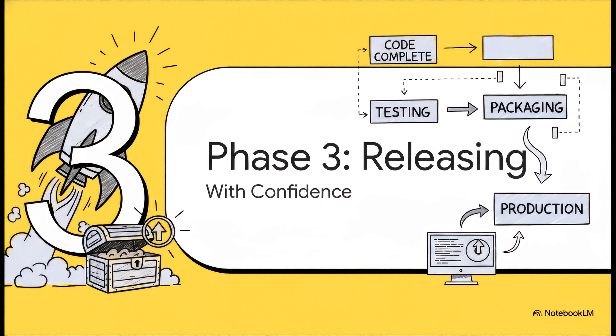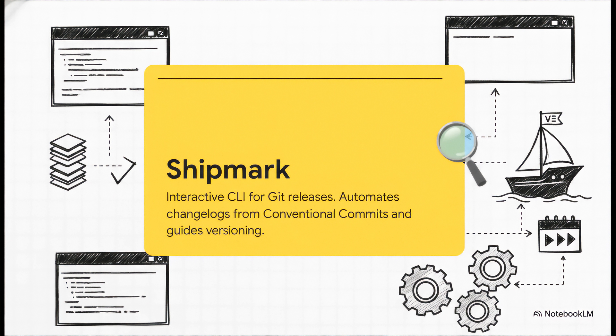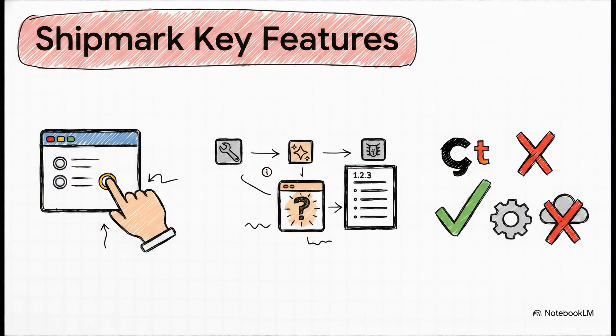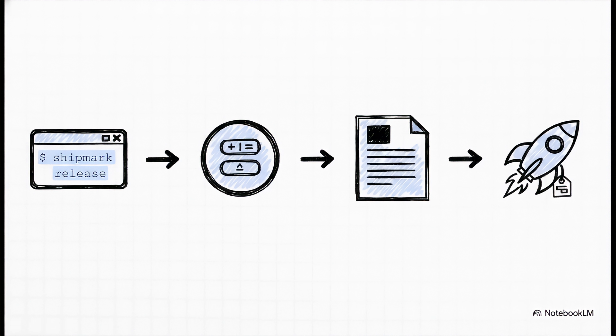We've planned our project and we've built out our features. Now it's time for the final, and let's be honest, often the most stressful step of all: the release. And this is where Shipmark just absolutely shines. It's an interactive command line tool that takes all the stress and anxiety out of releasing software and turns it into a simple, confident, guided process. It automates all the tedious stuff like writing up a changelog, so you can focus on the important part — actually shipping your code. It guides you with interactive prompts so you're never just shooting in the dark. If you use conventional commits — a really simple convention for your commit messages — it will automatically generate a beautiful changelog for you. And it works with native Git, no other dependencies needed.